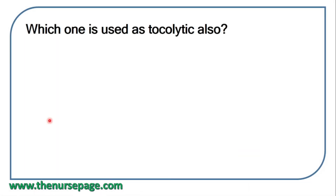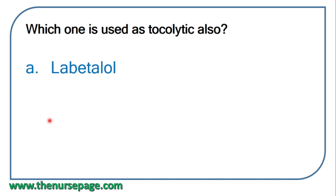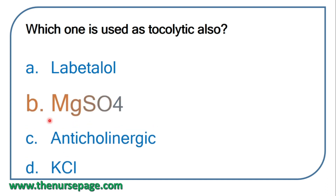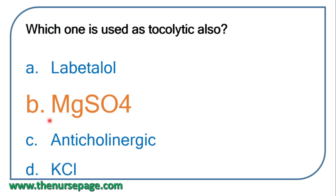Next question: which drug is also used as a tocolytic agent? From the options — labetalol, magnesium sulfate, cholinergic agents, calcium chloride — the correct answer is magnesium sulfate. As discussed earlier, magnesium sulfate is used for eclampsia and can also be used as a tocolytic agent to postpone or extend the delivery date.